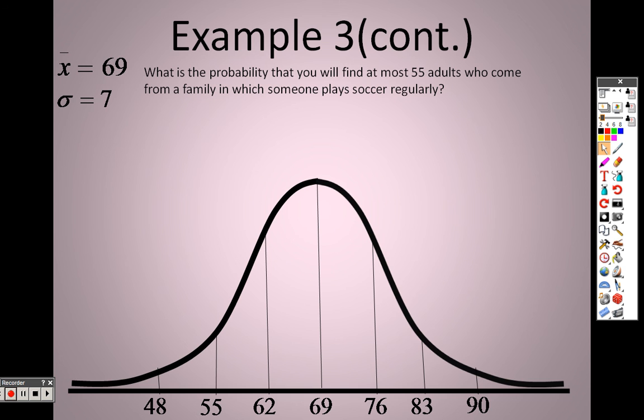And it says, what is the probability that you will find, at most, so the highest amount, at most, 55 adults? So, at most means I want this section, and I want this section. I don't want anything higher than that. So, the probability that the most people from a family in which someone plays soccer, that would be 2.5%.